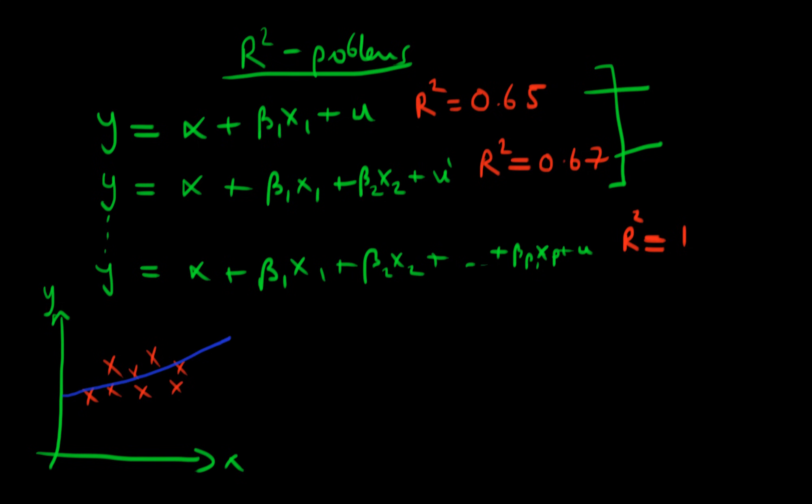And so our regression would look something like Y is equal to alpha plus beta X, or beta 1 X, plus some error U. And perhaps the R squared for that regression might be something like R squared is equal to maybe 0.5.